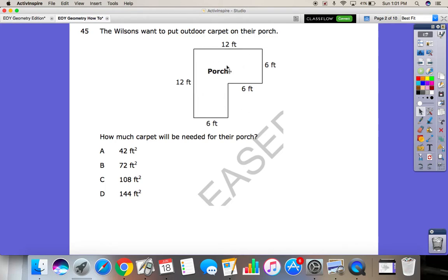We see that this is an irregular shape, and since it is carpet, we know that we're going to be covering the inside of it, so that's going to be area. For this one, you want to make sure that you cut it into two shapes that we are familiar with, and for me, I'm going to cut it into a square and then a rectangle.